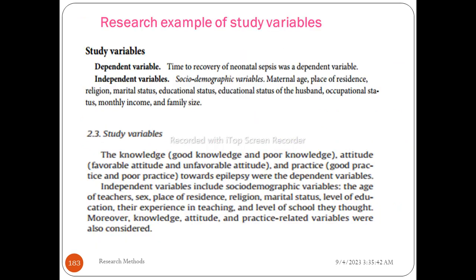A research example: in a study on neonatal care, the dependent variable is time to recovery of neonatal subsistence. The independent variables include social demographic variables such as maternal age, place of residence, religion, marital status, educational status, occupation, income, and family size.